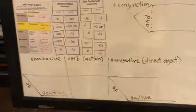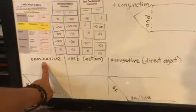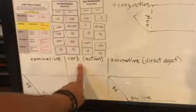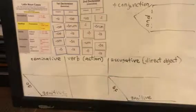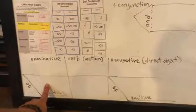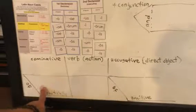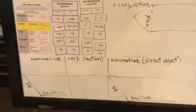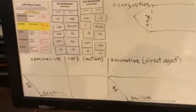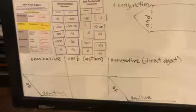Exercise 14 is also looking at nominative, your verb action, accusative or direct object format. Anything that's possessive is either going to be possessive here — genitive of your nominative, or genitive with accusative. And we may have a conjunction.